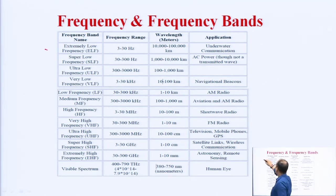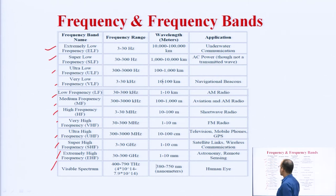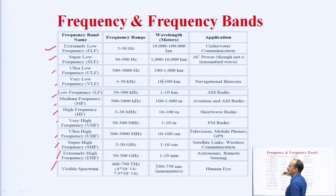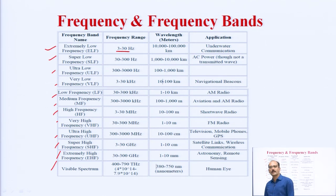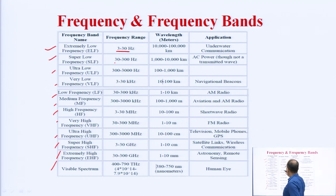You can see that we are starting from extremely low frequency, super low frequency, then ultra, then very low, then low, medium, high, very high, ultra high, super high and extremely high, then the visible spectrum. Now if you have to remember this chart, you can see the frequency range. The ranges go: 3 to 30, then 300 to 3000 — meaning 3 to 300 kilohertz, then 3 to 30 kilohertz. Similarly 300 to 3000 kilohertz means 3 megahertz, and further up into the gigahertz range.